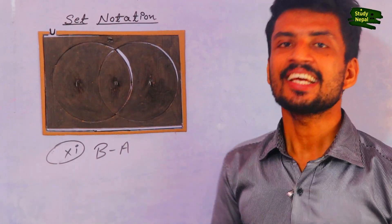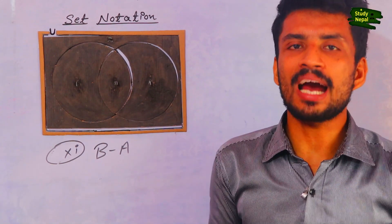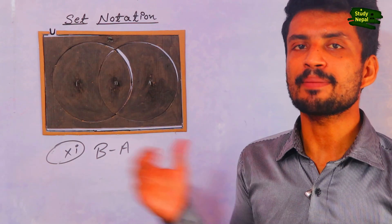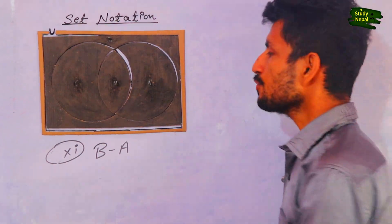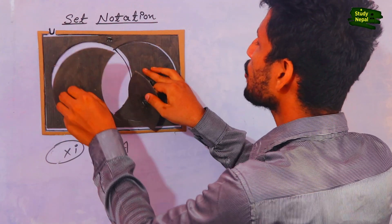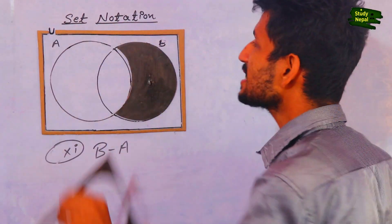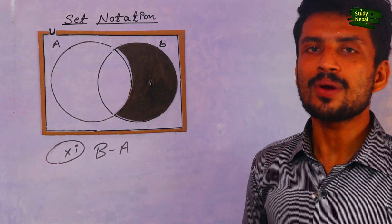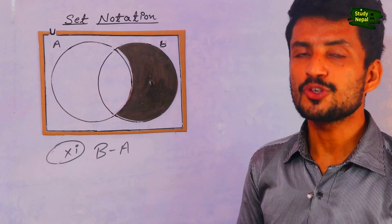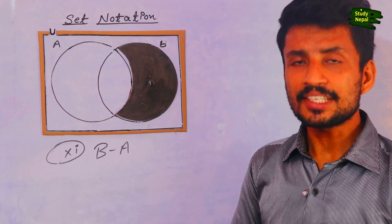The eleventh topic is B minus A. It means we have to remove the A portion from B and show only the pure B in the Venn diagram. We remove the A portion and only the pure B remains. This is the answer of B minus A shown in this Venn diagram using the cardboard.